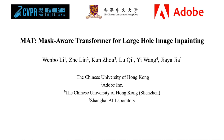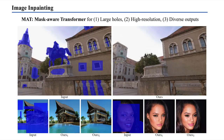Hi everyone, I'm Jelin from Adobe Research. I'm excited to present our paper titled Mask-Aware Transformer for Large Hole Image Inpainting. Image inpainting is the task of completing missing regions in an image to generate a visually plausible result. In this work, we propose a new image inpainting model called Mask-Aware Transformer to handle large holes, high-resolution inputs, and also allow the model to generate diverse outputs.